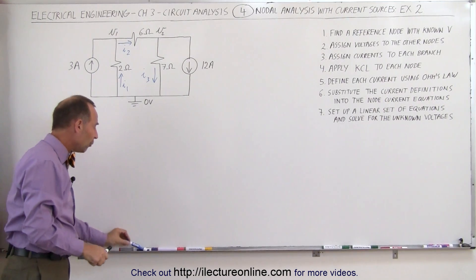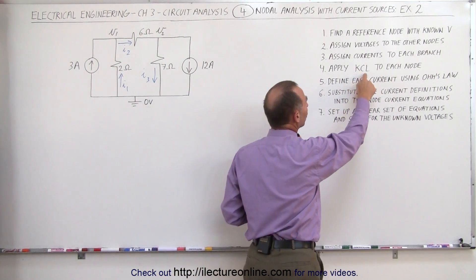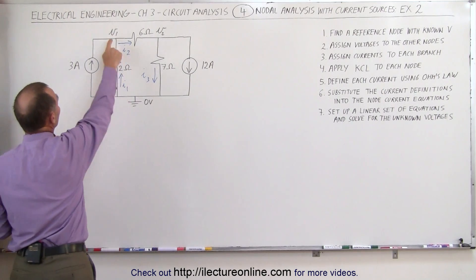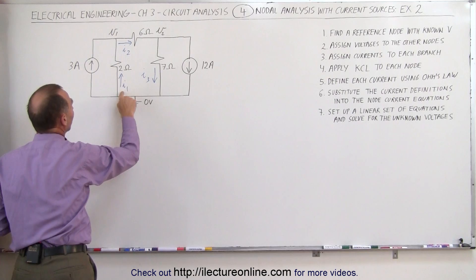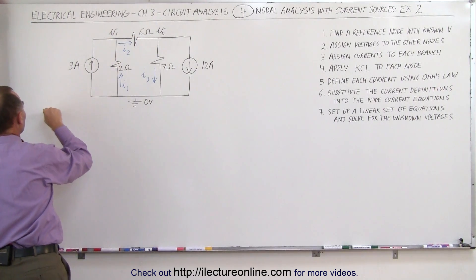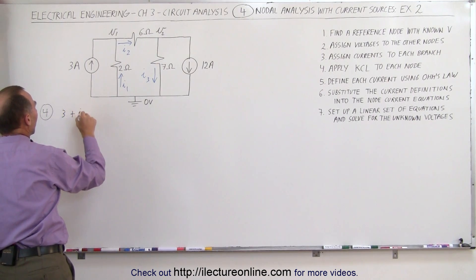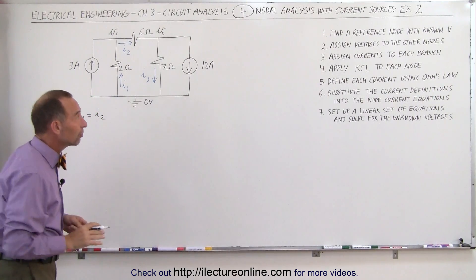The next step, step four, we need to derive some equations. We use the Kirchhoff current law at each node to derive some equations relating the currents to each other. At this node right here we notice that a three amp current is entering as well as an i1, and i2 is leaving, which means that three amps plus i1 must equal the current leaving that node which is equal to i2. That's our first equation.